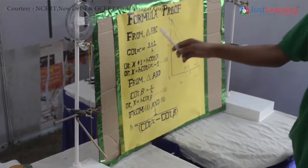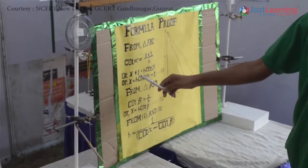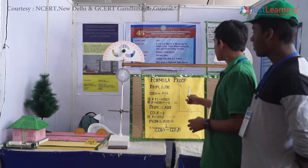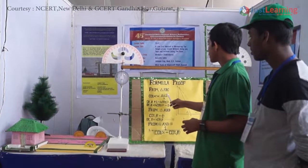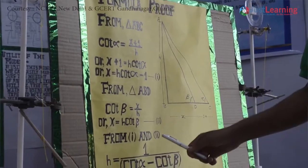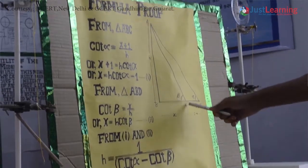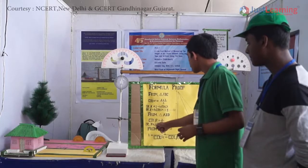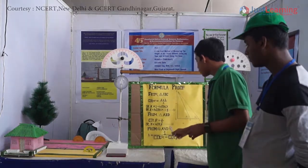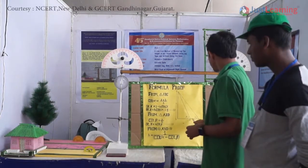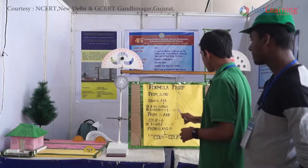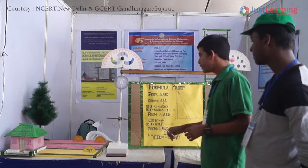You can see there are two triangles: triangle ABC and triangle ABD. These are two right angle triangles. Let us suppose we measure the height AB which is H, and there are two angles alpha and beta. From triangle ABC, we get cot alpha equal to x plus l by h, or x equal to h cot alpha minus l, which is named as equation 1. From triangle ABD, we get cot beta equal to x by h, or x equal to h cot beta, which is named as equation 2. By combining equations 1 and 2, we get h equal to l by cot alpha minus cot beta. The distance DC is mentioned as l for making it a standardized formula. So, by knowing the angles alpha and beta, we can easily find the height of any object.